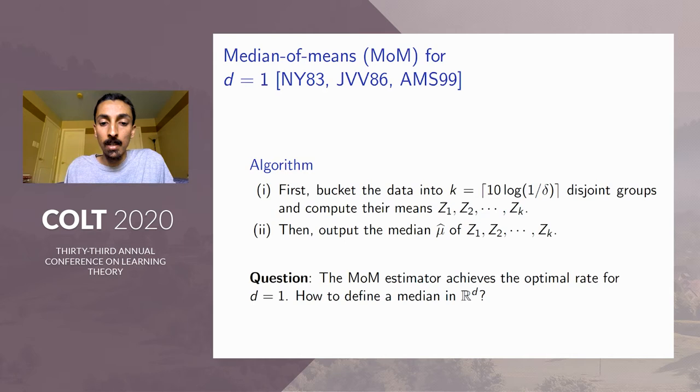So a very natural question is, can we do this for dimension bigger than one? So step one is well defined in high dimensions, but for step two it's not so clear what we mean by median. There are multiple potential definitions of a median in higher dimension. So the key challenge is how to define this median to give a good estimator.